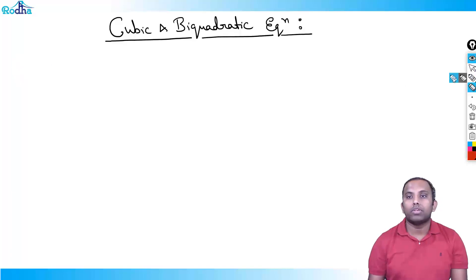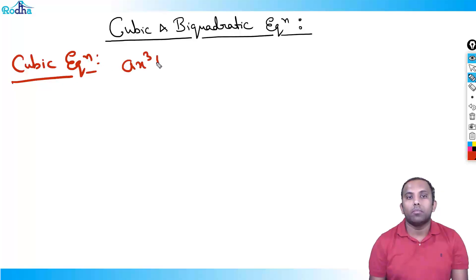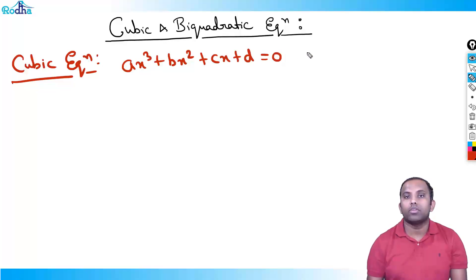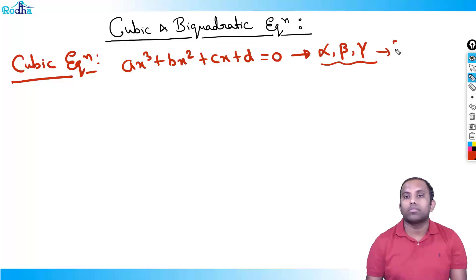A cubic equation is basically of the form: ax³ + bx² + cx + d = 0. Cubic means power 3. Let the roots be α, β, γ. Since the power is 3, there will be 3 roots: α, β, γ.